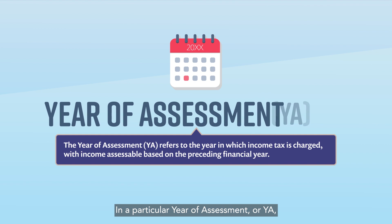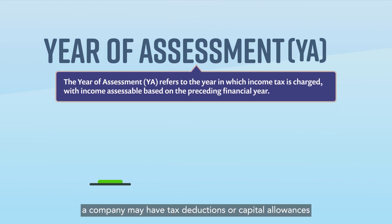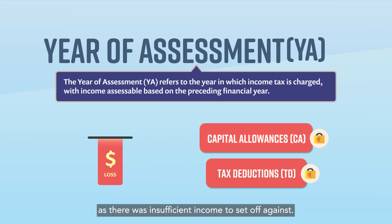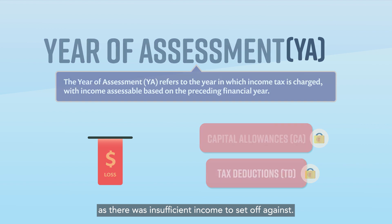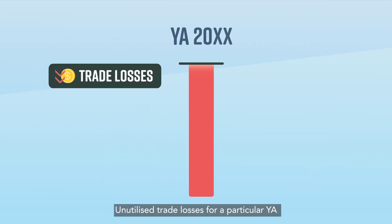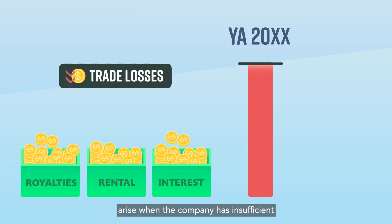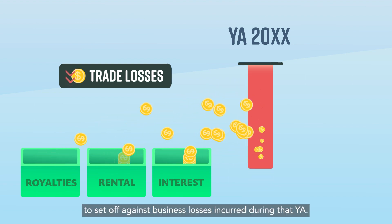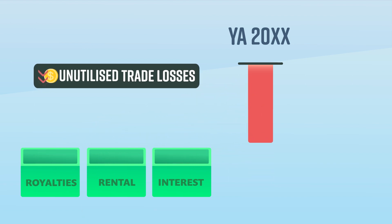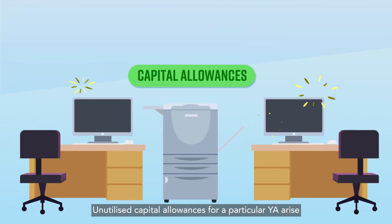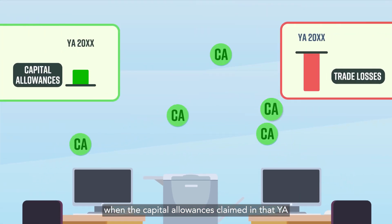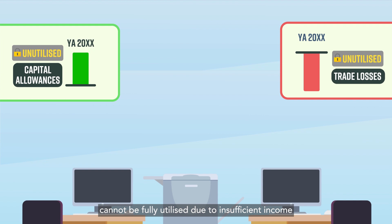In a particular year of assessment, or YA, a company may have tax deductions or capital allowances that could not be fully utilised as there was insufficient income to set off against. Unutilised trade losses for a particular YA arise when a company has insufficient or no income from other sources to set off against business losses incurred during that YA. Unutilised capital allowances for a particular YA arise when the capital allowances claimed in that YA cannot be fully utilised due to insufficient income or business losses incurred during that YA.